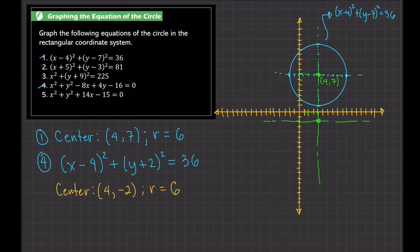The radius is 6. So again, count 6 units in all directions. 1, 2, 3, 4, 5, 6. 1, 2, 3, 4, 5, 6. And then 1, 2, 3, 4, 5, 6. And then 1, 2, 3, 4, 5, 6.